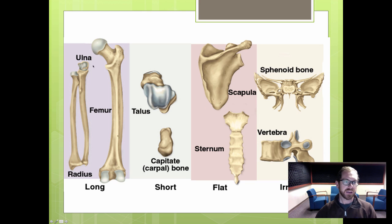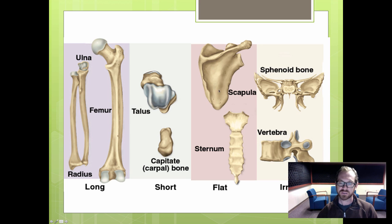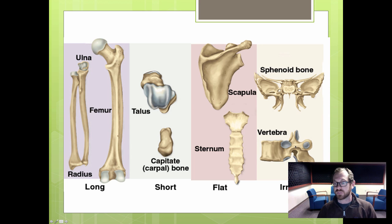Looking at examples: long bones are longer than they are wide. Short bones, such as bones in your ankle and wrist, are roughly equally long as they are wide. Flat bones include your scapula, or shoulder blade, as well as your sternum. Irregular bones don't fit any other category — examples include vertebrae and the sphenoid bone in your skull.